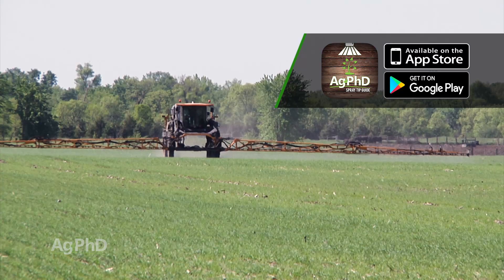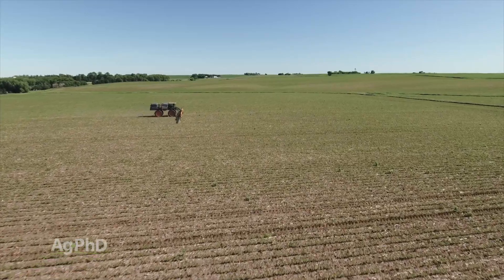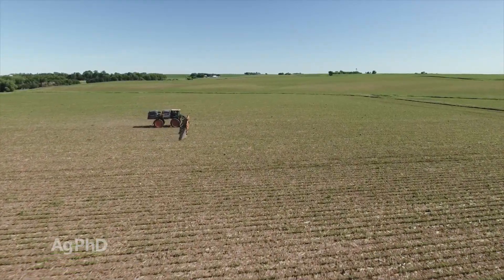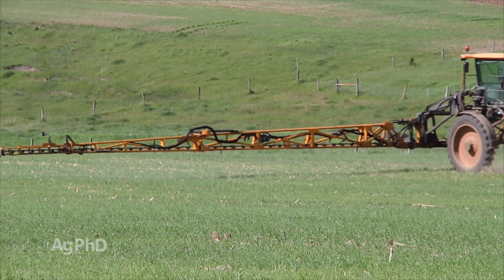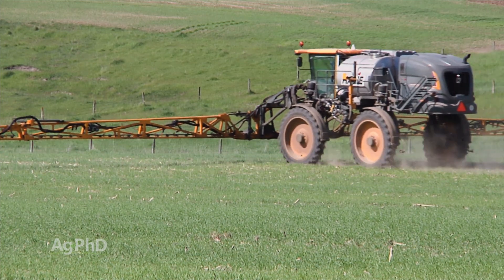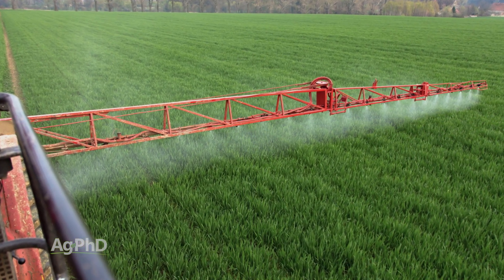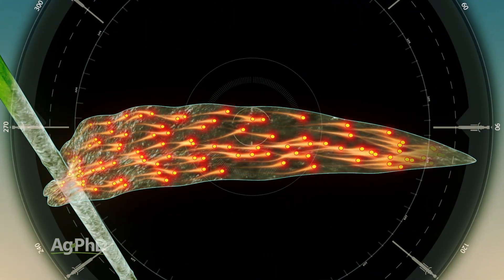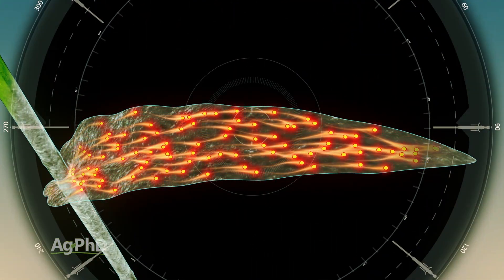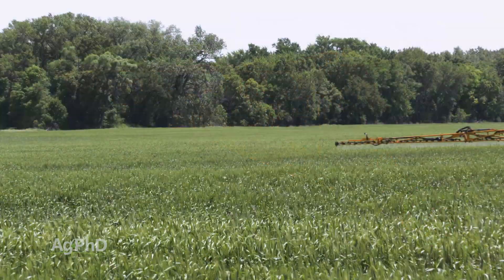The good news is we don't have a lot of the major drift issues in wheat that we would in, say, soybeans where you're spraying dicamba in the middle of summer. Most of the time in wheat, the products work a little better when we have more water, a little higher spray pressure, and a little smaller droplet — so that fits right into what you want for the best performance with fungicides. Because fungicides only move in the xylem of the plant, which only moves upward, you can never have the fungicide protecting anything lower on the plant than where you physically get the spray. That's why coverage is so important.